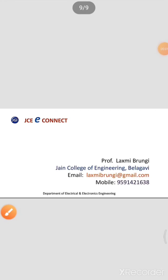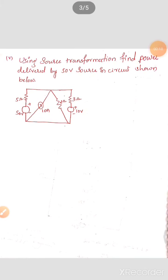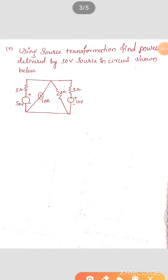Good morning all, welcome to this lecture. Today we are going to discuss source transformation. Source transformation is a procedure which transforms one source into another, while retaining the terminal characteristics of the original source. So, the meaning is one source can be transformed into another source, but retaining its terminal characteristics of the original one.